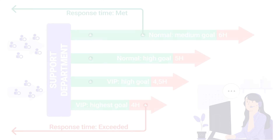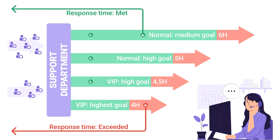In our example, we have a support department. It will be addressed by users of various types: VIP, middle, and normal. For each user, the time to solve their problem corresponds to the level of their service. Our support team undertakes to provide an answer or solution to the user within the specified time. The SLA is met if the team responds to requests and solves customer problems on time.